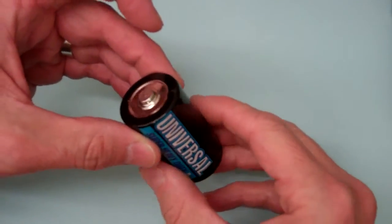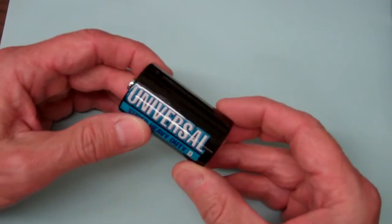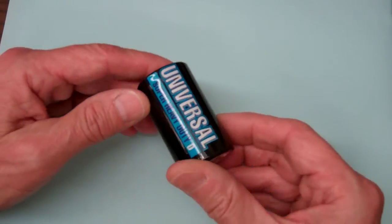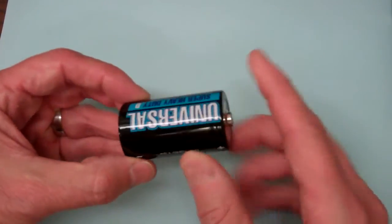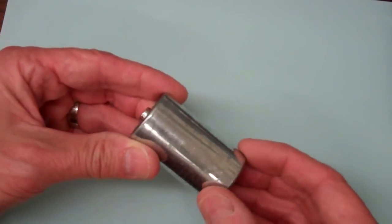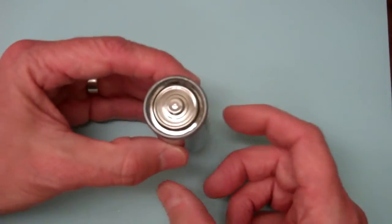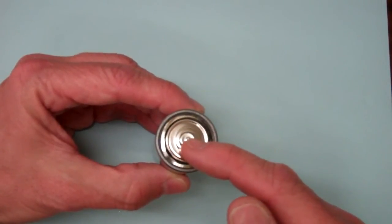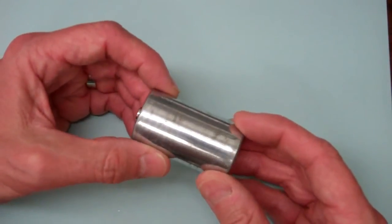Here I have a D cell, which is a zinc carbon battery, although it would probably be more proper to refer to it as a zinc manganese battery because the carbon plays no role in the electrochemical reaction that takes place. So if I were to remove the labeling here on the outside of the battery, which I have done on this one, you would see that the outside can here is made of zinc and that functions as one electrode. Down the center is a carbon rod and around that carbon rod is a manganese oxide. So the manganese oxide and the zinc serve as the two electrodes.